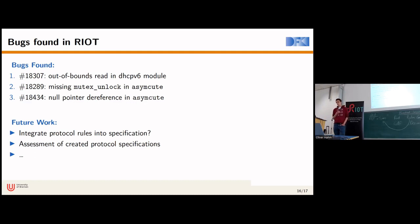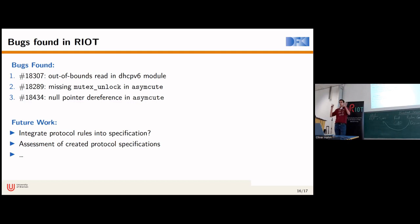Regarding error detection, we were only able to find bugs that trigger RIOT's panic handler. One opportunity for future work is to encode protocol rules into the specification — such as what response is expected for a given request — to also check for functional errors. Another interesting direction is assessing the protocol specifications themselves, since they are created manually. A specification that is too narrow may miss bugs, while one that is too loose reduces focus. Finding the right trade-off is an open challenge.